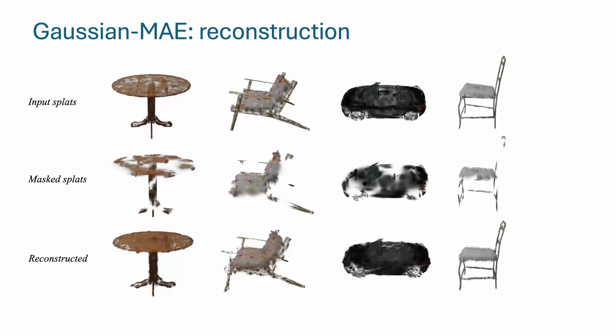Here, we show the reconstructed Gaussians of the masked inputs. Our model can effectively reconstruct the fine details like table foot and chair frames.